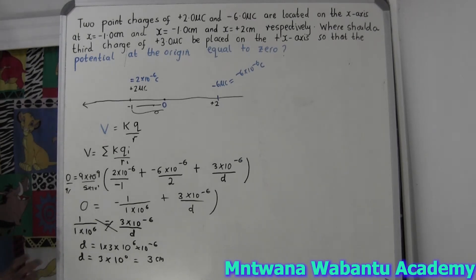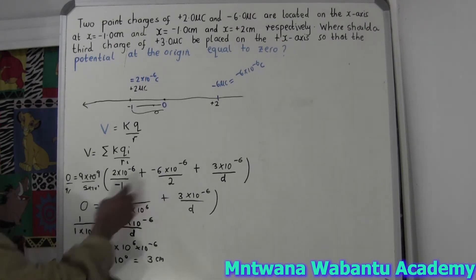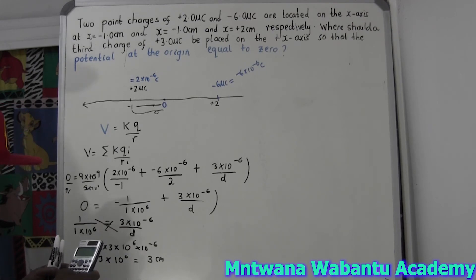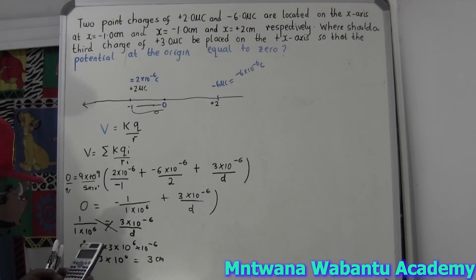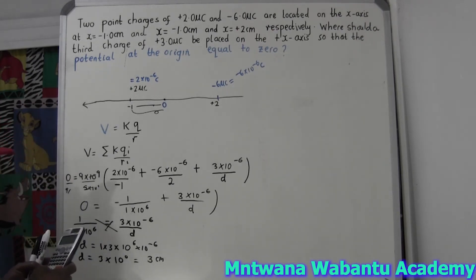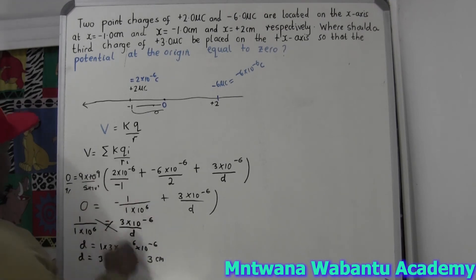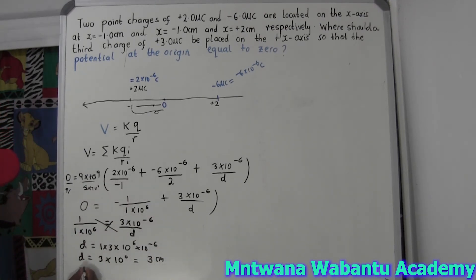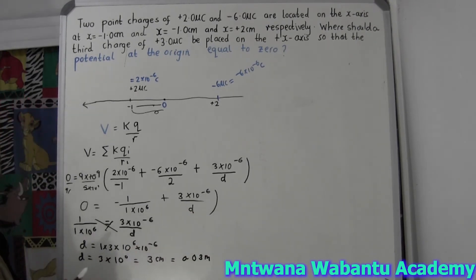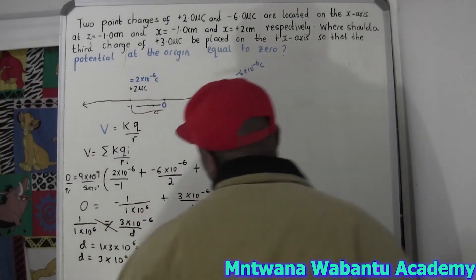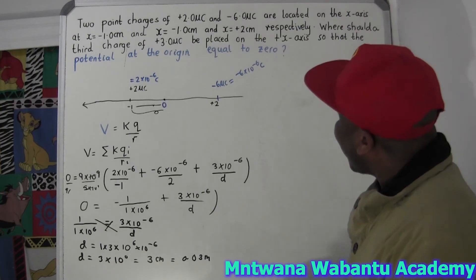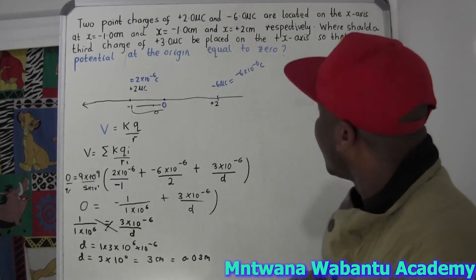Let me verify this with the calculator. Two times ten to the negative six, and then we add negative six times ten to the negative six divided by two — and yes, that confirms it. The result is positive, so our distance d equals three centimeters, or 0.03 meters if you want to convert. So this charge must be placed three centimeters to the right.